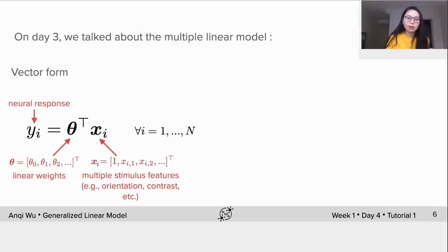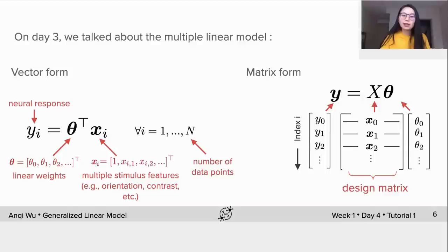i is the index of data points and n is the number of total data points. We could also build it up to a matrix form for all data points as y = Xθ. The capital X is called design matrix; the columns correspond to features and rows correspond to data points.